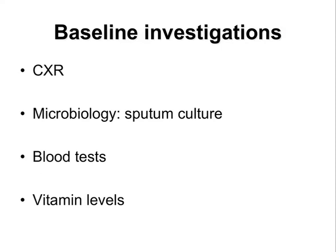The baseline investigations required in a patient diagnosed with cystic fibrosis include chest X-ray, which may show hyperinflation, peribronchial thickening, and then progress to patchy infiltration and bronchiectasis. Sputum culture is required to check for Staph aureus, Pseudomonas aeruginosa or Klebsiella. Blood tests for full blood count, coagulation, immunoglobulins, renal and liver function are required, as well as vitamin levels of A, D and E — the fat-soluble vitamins.